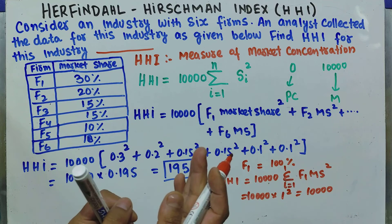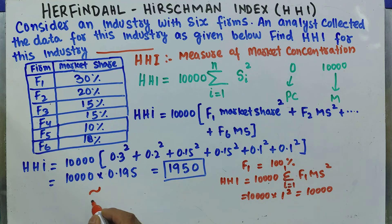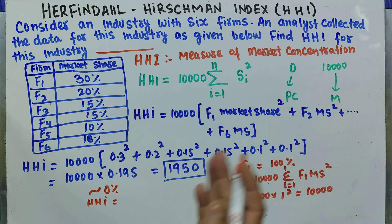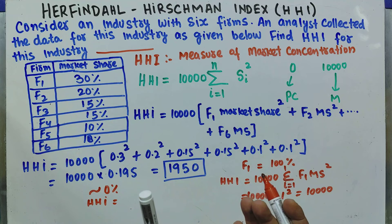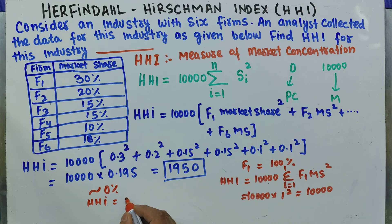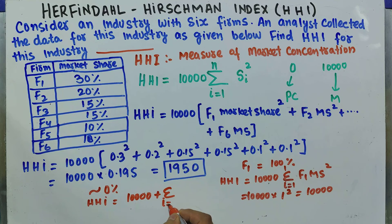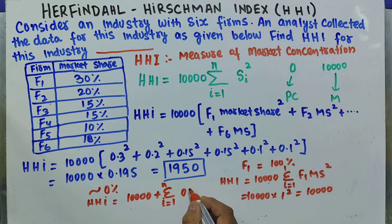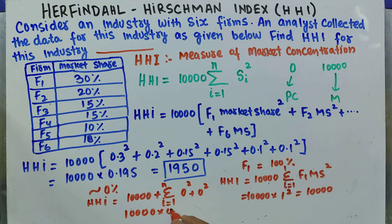If the market share of each firm in the industry is closer to zero, then HHI = 10,000 times the summation of each firm's market share squared, where each share approaches zero. When we add these up, the result approaches zero, meaning HHI approaches 0 — perfect competition. I hope I made myself clear in this video. Thank you.